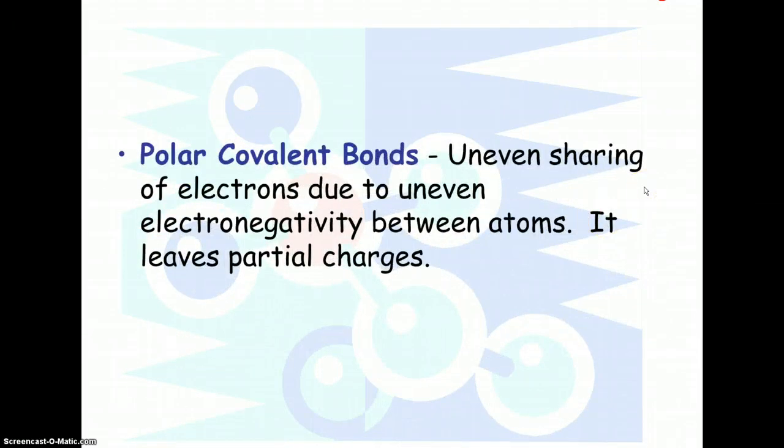Now, in the middle, we have what's called a polar covalent bond. What happens here is there is a difference in electronegativity. One of them's pulling harder than the other on the electrons. The thing is, it's not pulling hard enough to actually steal them. It's just pulling hard enough that the electrons are sort of hanging around that atom in the bond more than the other one.